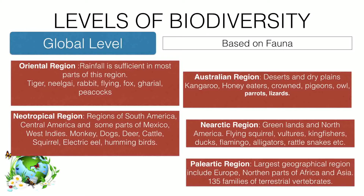In the Neotropical region, animals like monkeys, dogs, deer, cattle, squirrels, electric eels, and hummingbirds are common. The Australian region consists of deserts and dry plains where kangaroos, honeyeaters, pigeons, owls, and parrots are common animals.